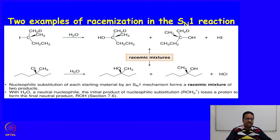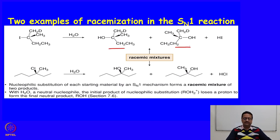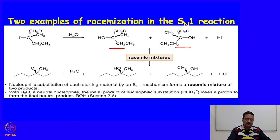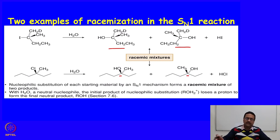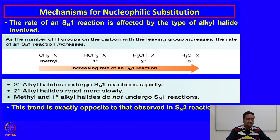For example, if compound A has a chiral center and Br minus leaves, the resulting carbocation has two faces (Re and Si, also called Pro-R and Pro-S faces). When the nucleophile attacks from the left or right, two different products B and C are formed — a pair of enantiomers. Similarly, with water as nucleophile attacking from either face of the carbocation, two enantiomeric products are obtained.